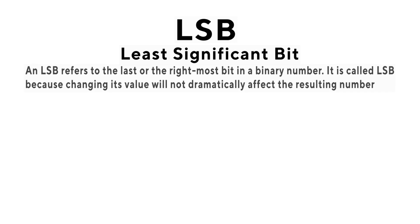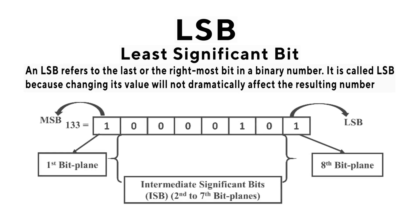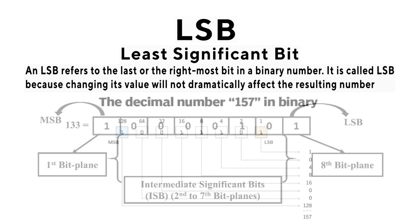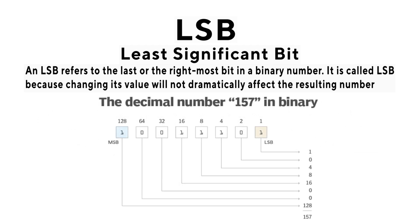LSB: Least Significant Bit. An LSB refers to the last or the rightmost bit in a binary number. It is called LSB because changing its value will not dramatically affect the resulting number.